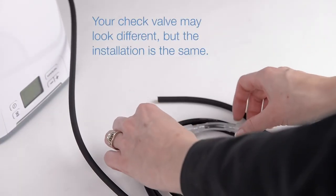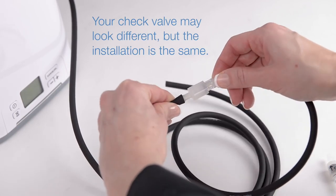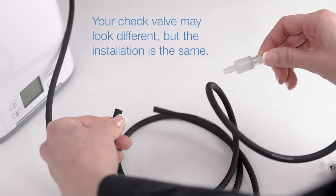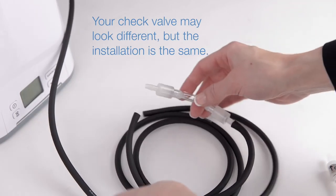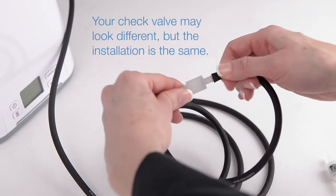Grasp the barrel of your current check valve firmly and pull the tubing away. It may be necessary to use a twisting motion. Repeat to disconnect the tubing from the other side.